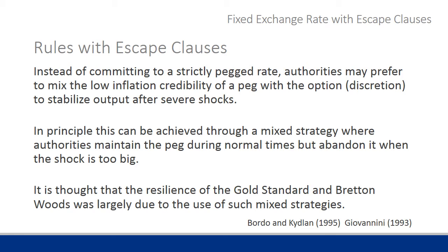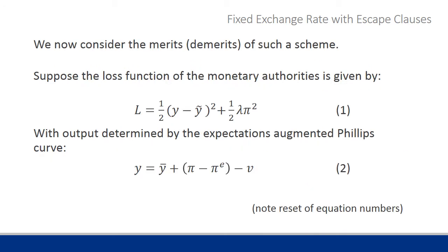Another option for economic authorities is, rather than sticking strictly to a peg with inflation rate zero, to allow some contingency or discretion to stabilise output after a severe financial or economic shock. We can do this with a mixed strategy where authorities maintain the peg when things are running normally, but in the event of a massive shock there is a contingency to react and the peg can be abandoned. It is thought that because of these opt-out clauses, the gold standard and Bretton Woods systems were successful.